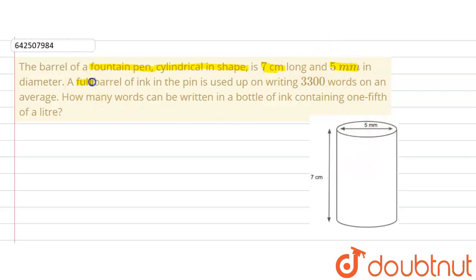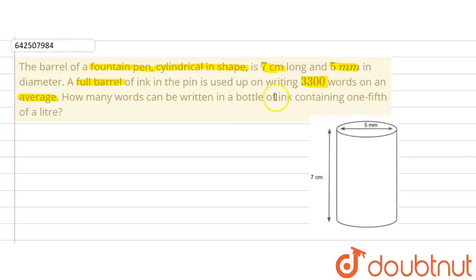The question further says that a full barrel of ink in the pen is used up on writing 3300 words. So when the barrel is full, the pen can be used to write 3300 words on average. How many words can be written using a bottle of ink containing one fifth of a litre?